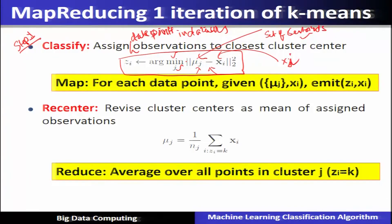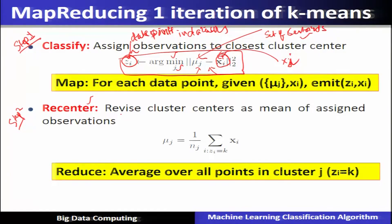The label j identified for a particular x_i gives us z_i as the label or centroid for data point x_i. The next step in k-means, which we have seen in previous slides, is called recenter. After classifying the data set points into different clusters, for every cluster we calculate the mean of that particular cluster, and that mean becomes the new centroid. This is called recenter, and these two steps form the first iteration of the MapReduce k-means algorithm.